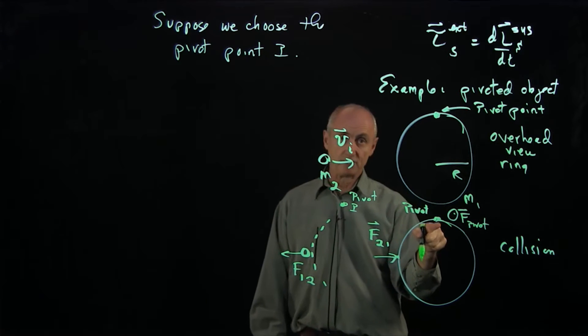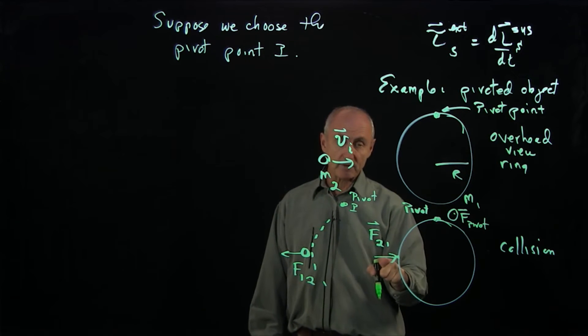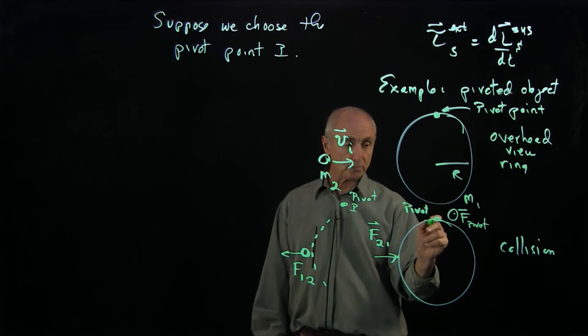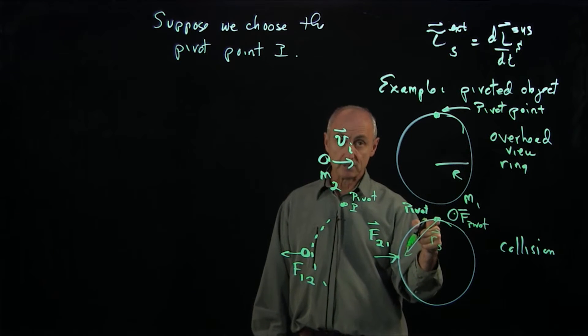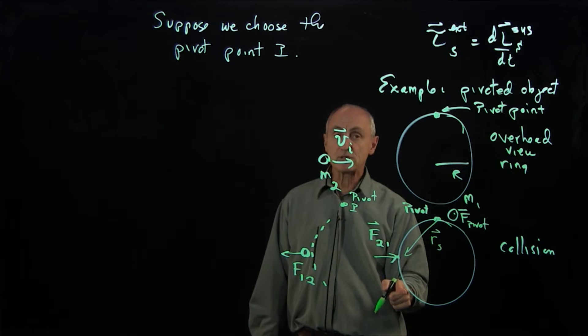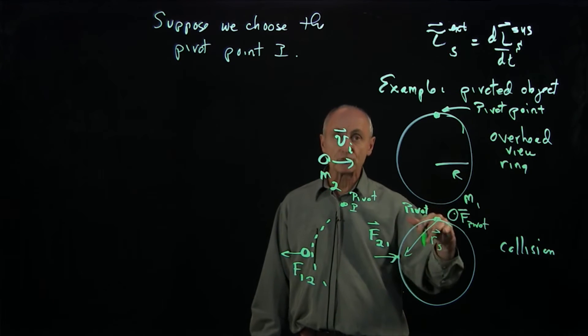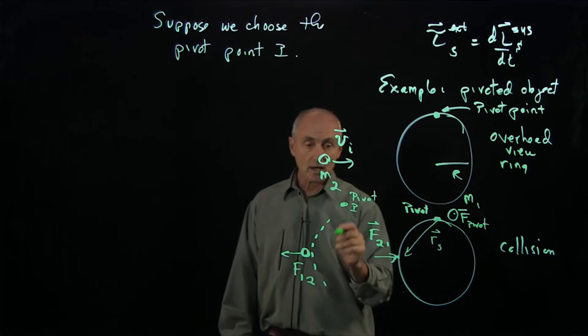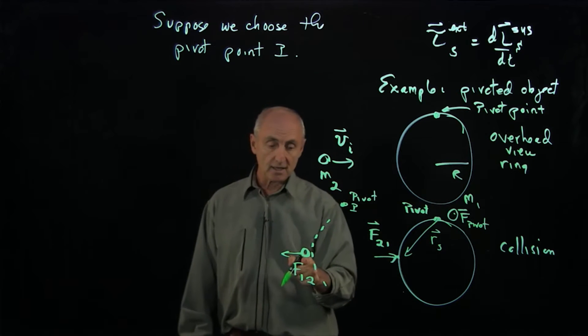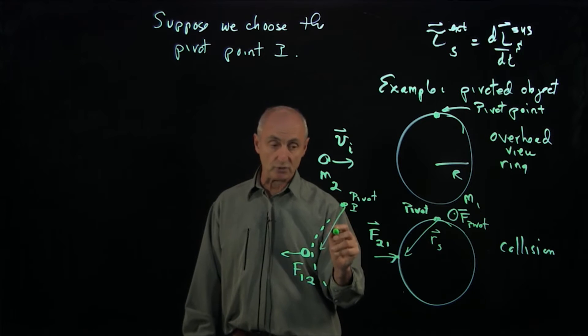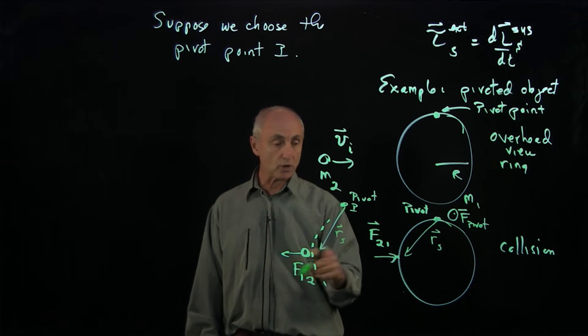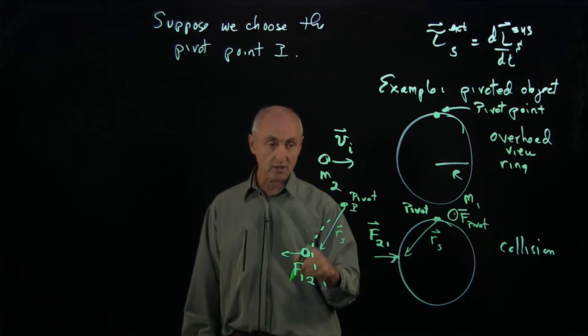Remember, pivot forces have no torque about the pivot point. However, this collision force will produce a torque about the pivot. And that's the angular momentum of the ring is not constant, because the ring will start to rotate. Similarly, this object will reverse directions or will do something due to the collision. And again, this force will produce a torque that's equal and opposite to the torque on the ring.